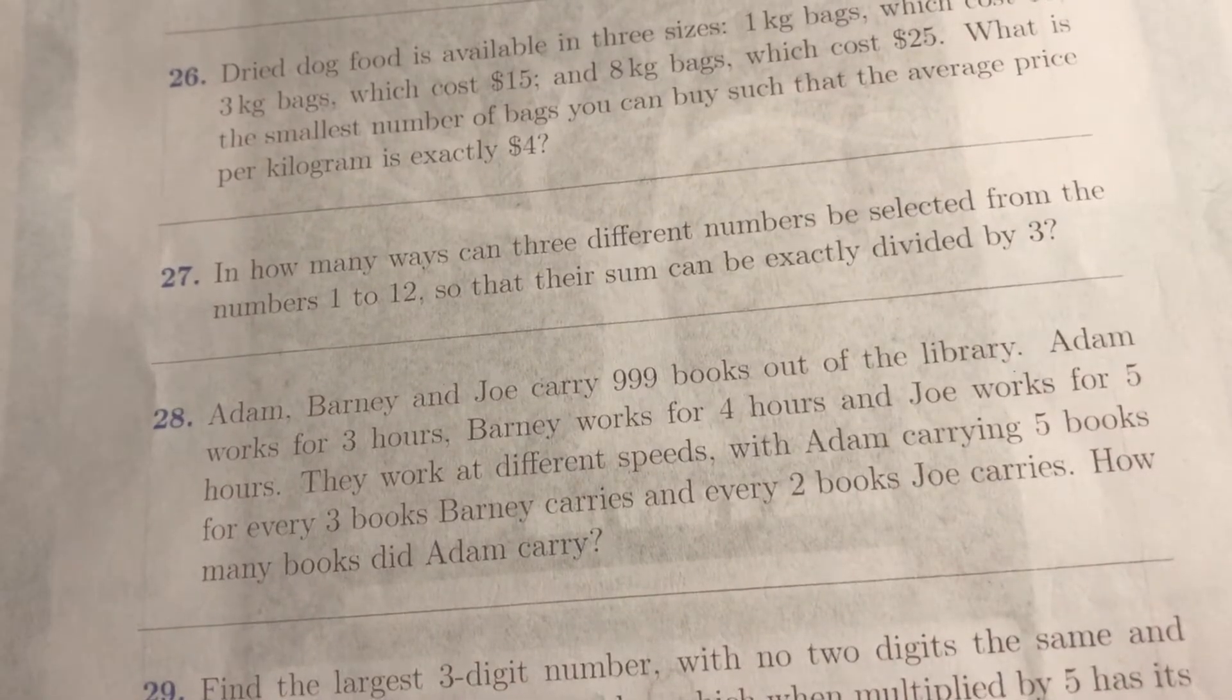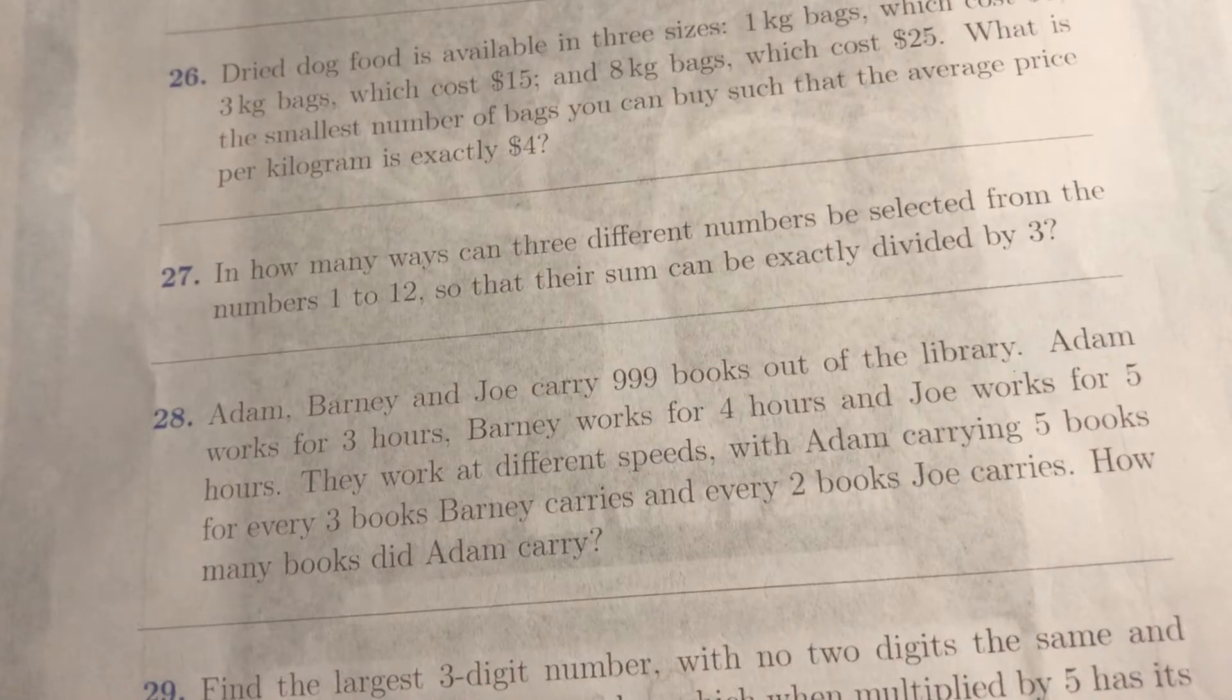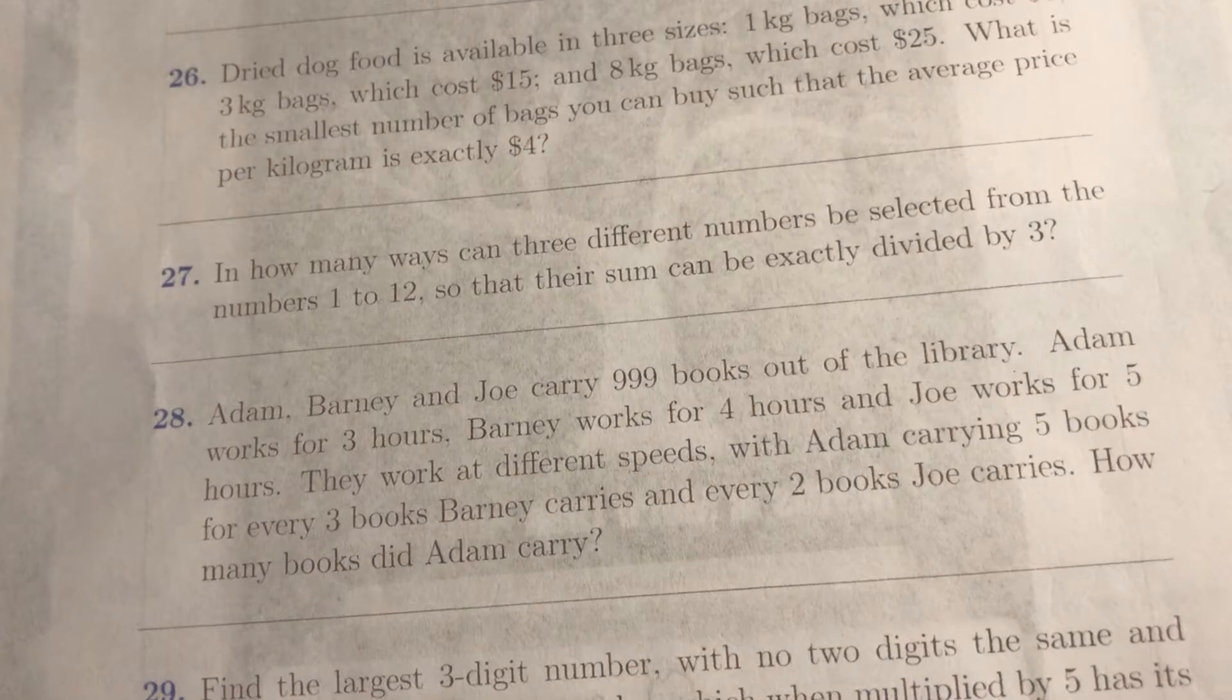Let's look at question number 27 in this primary mass test. How many ways can three different numbers be selected from numbers 1 to 12 so that the sum can be divided by 3?